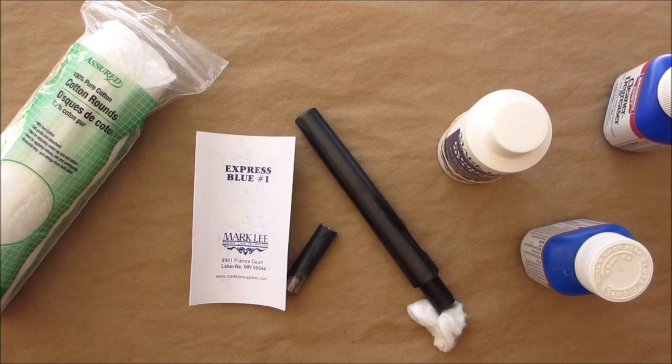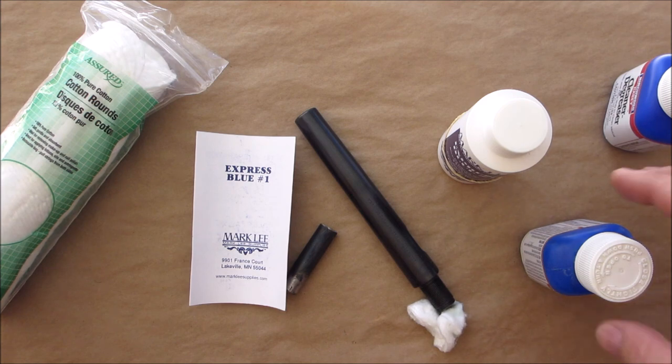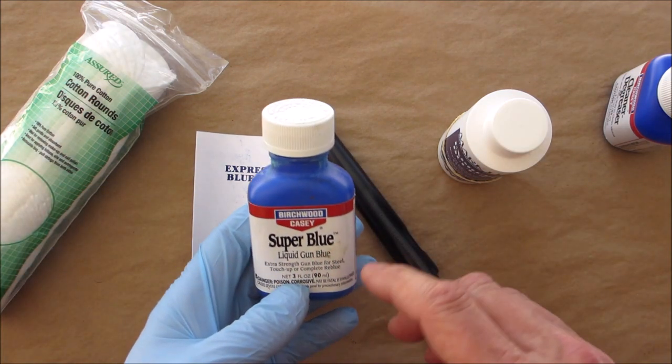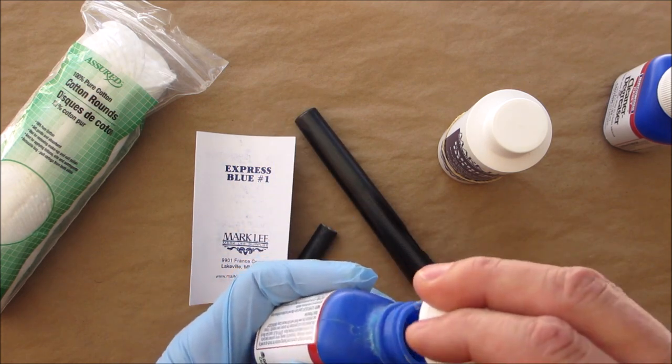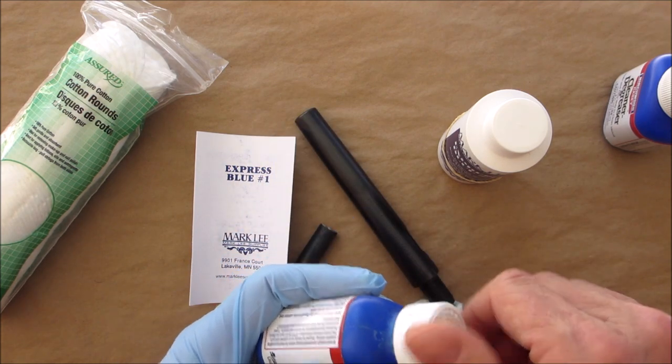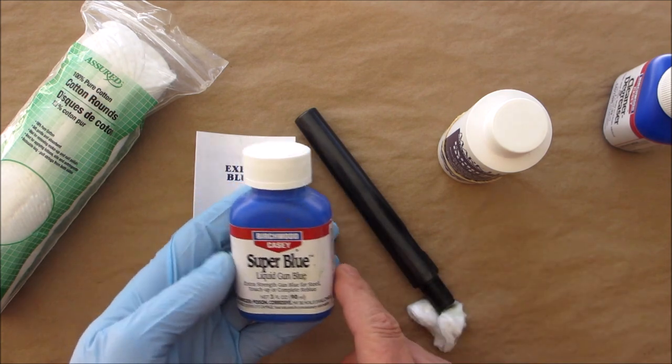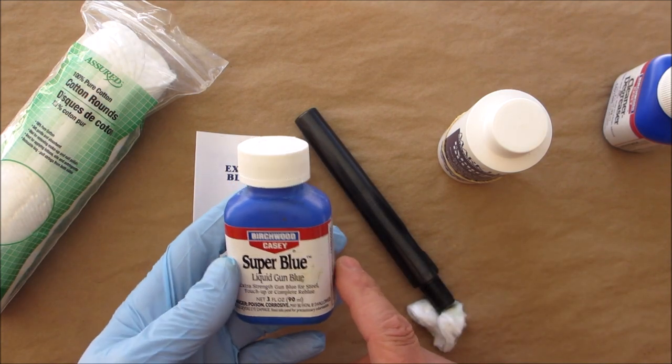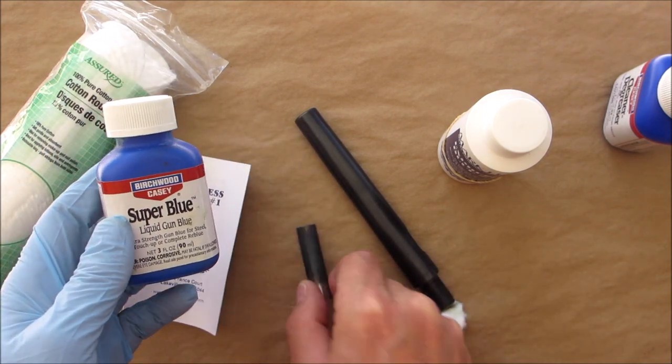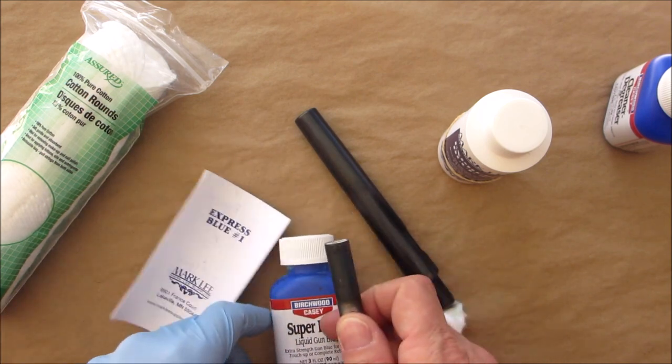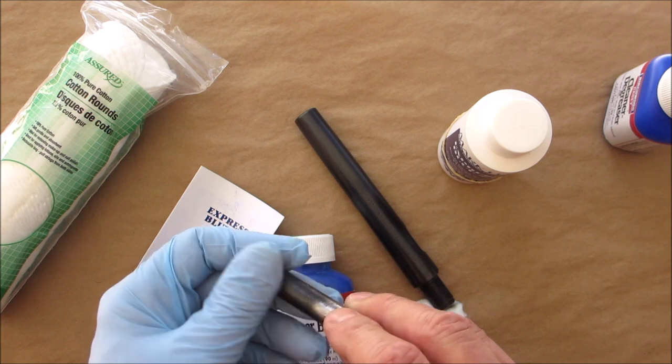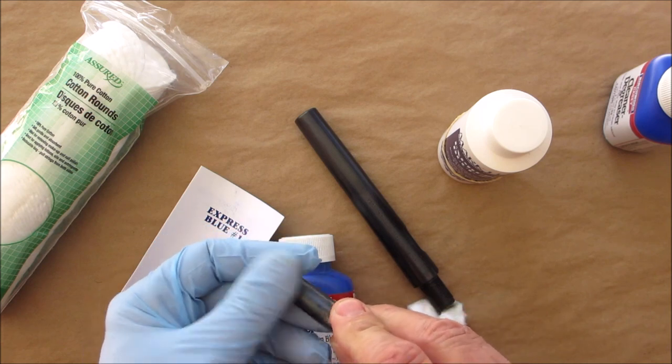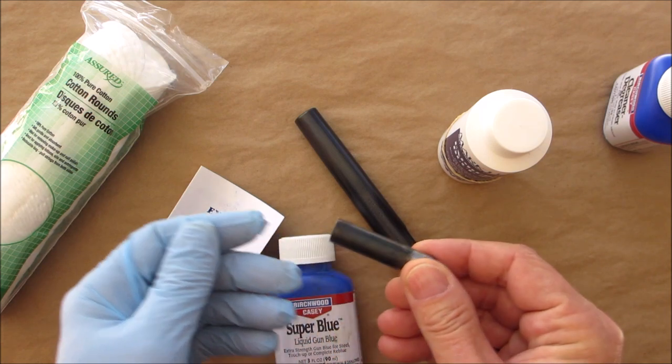But the Super Blue for light touch-ups and for just some tools you might have, maybe a punch or you're refurbishing a screwdriver or something, it looks pretty cool to blue it. And then of course you follow the directions, you wash it down, dry it again, little steel wool in between, and then you oil it.